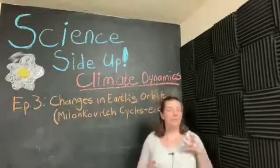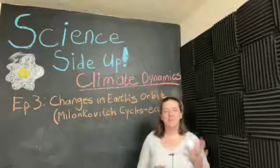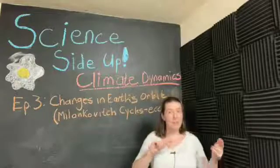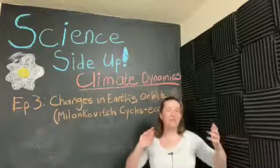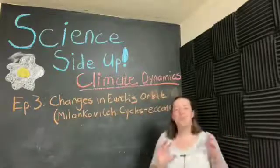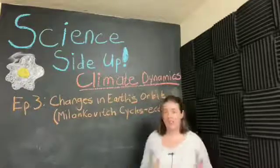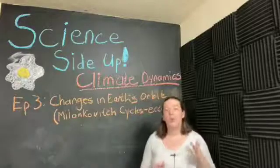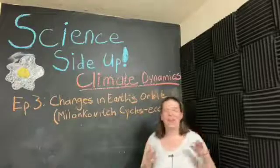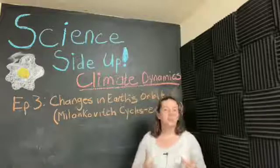In the first two episodes, we looked at black body equilibrium equations for the Earth. The first time we didn't take into account that the Earth has an atmosphere. In the second episode, we corrected that and understood how the atmosphere acts to warm Earth's surface. Now we're going to look at long-term changes in Earth's orbit.